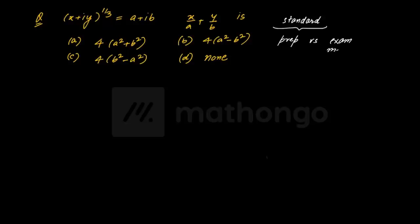Yahaan pe agar ek accha student hoga jo acchi preparation karke baitha hoga, woh usko jaldi kaise karega? Hamein kahin bhi bola hai ki x can take any particular value - nahi bola na, koi particular value. Toh main kya kar leta hoon, yahaan pe assume kar leta hoon - I'll assume that x is equal to 1, and I'll take y equal to 0. Koi hi haam nahi hai. Toh, yeh kya ban jaayega - 1 ki power 1 by 3 is equal to a plus 1 by iota b.